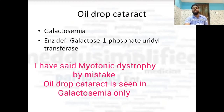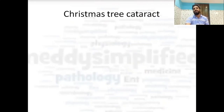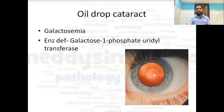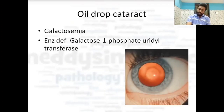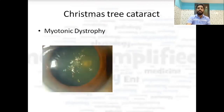To correct an earlier statement: oil drop cataract is seen in galactosemia — the enzyme deficient in galactosemia is galactose-1-phosphate uridyl transferase. Christmas tree cataract is seen in myotonic dystrophy. This is how an oil drop cataract looks — there is a drop of oil in the center. And this is how Christmas tree appearance looks in that cataract.